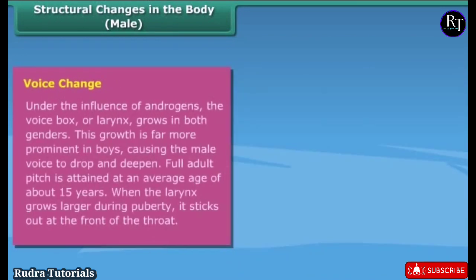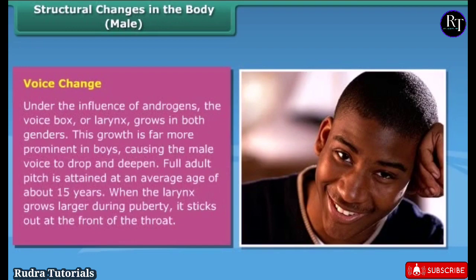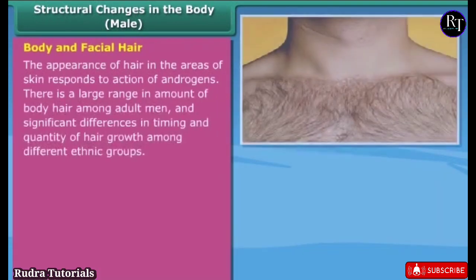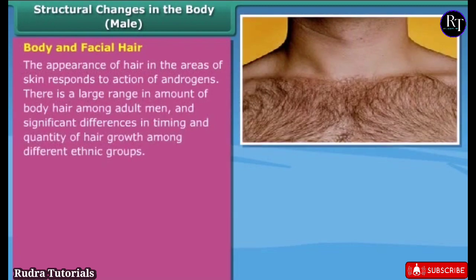Voice change occurs under the influence of androgens — the voice box or larynx grows in both genders, though this growth is far more prominent in boys, causing the male voice to drop and deepen. Full adult pitch is attained at an average age of about 15 years. When the larynx grows larger during puberty, it sticks out at the front of the throat. Body and facial hair also appear as the skin responds to the action of androgens.